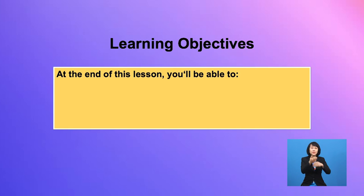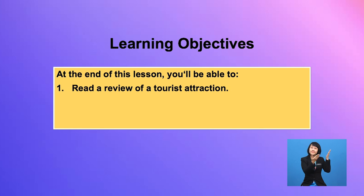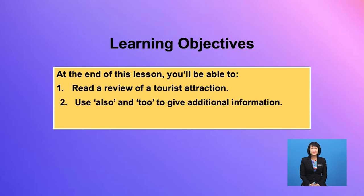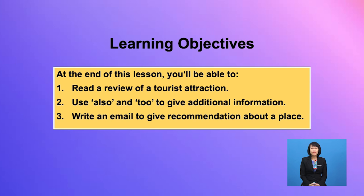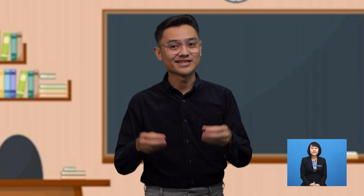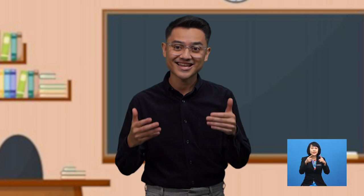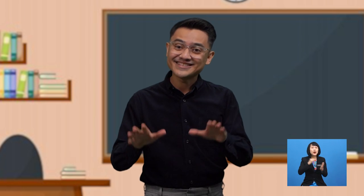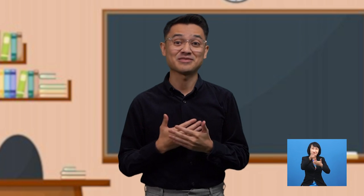By the end of this lesson, I hope you will be able to: 1. Read a review of a tourist attraction. 2. Use 'also' and 'too' to give additional information. And 3. Write an email to give a recommendation about a place. It's going to be an interesting lesson, so I hope you stay tuned until the end.